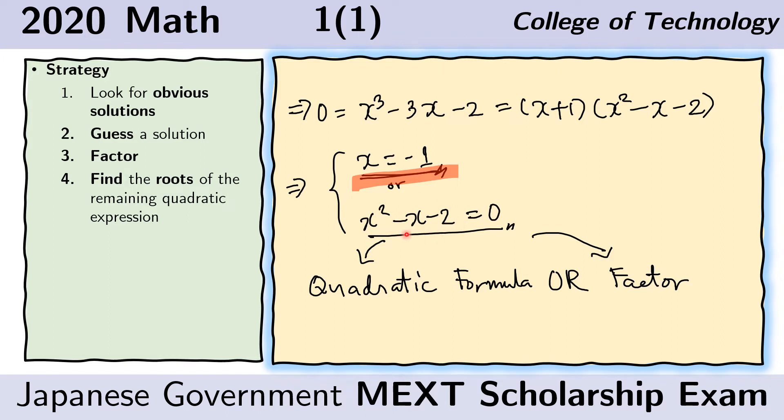And in this problem, we show two ways of solving this. We use the quadratic formula, and the other way is just plain factoring. And the solutions that we get from this equation will also be solutions to the original cubic equation.